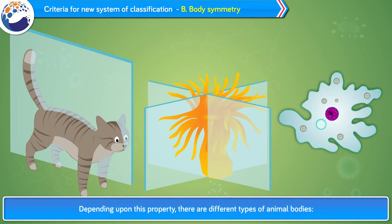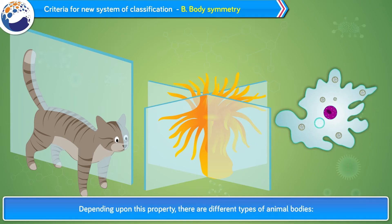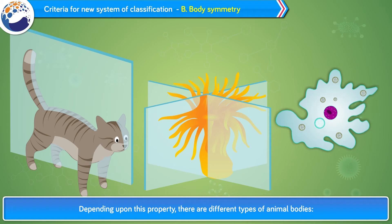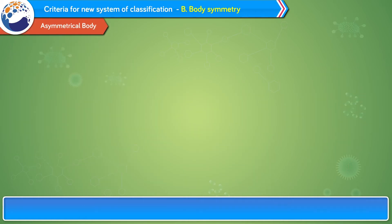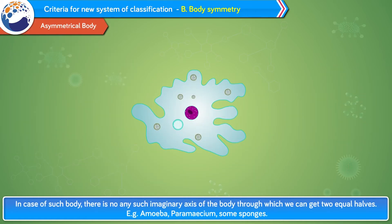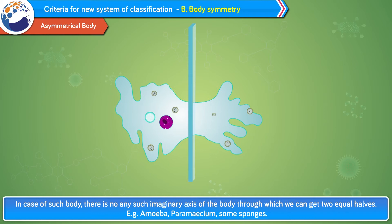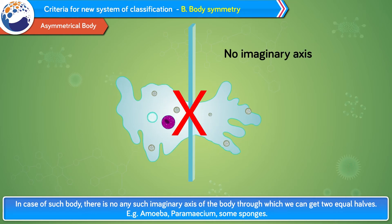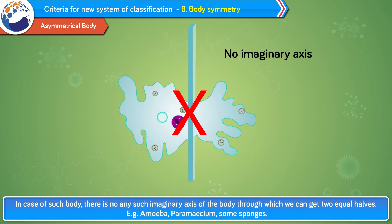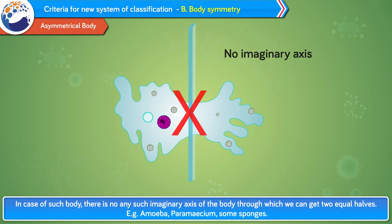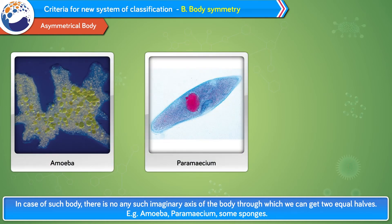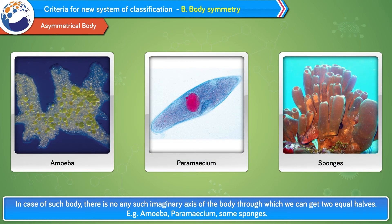Depending upon this property, there are different types of animal bodies. Asymmetrical body: in the case of such a body, there is no imaginary axis through which we can get two equal halves. Examples: amoeba, paramecium, some sponges.